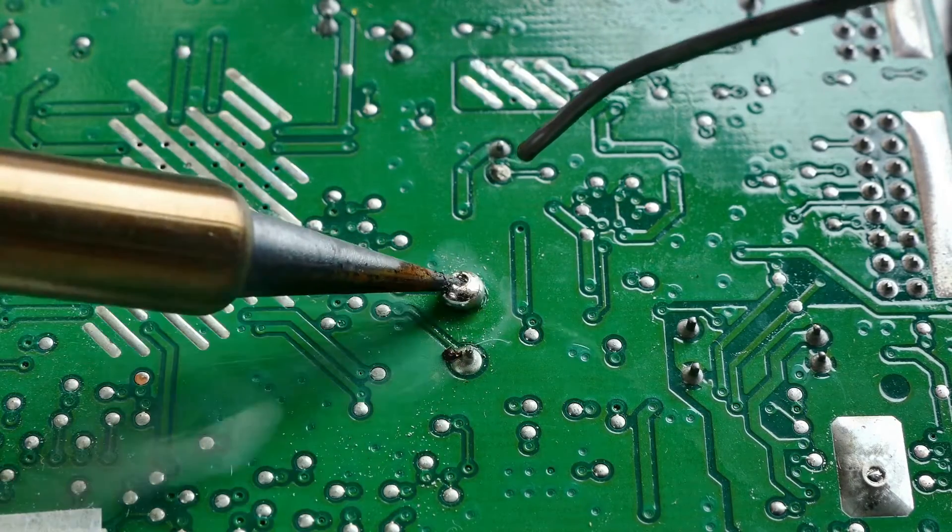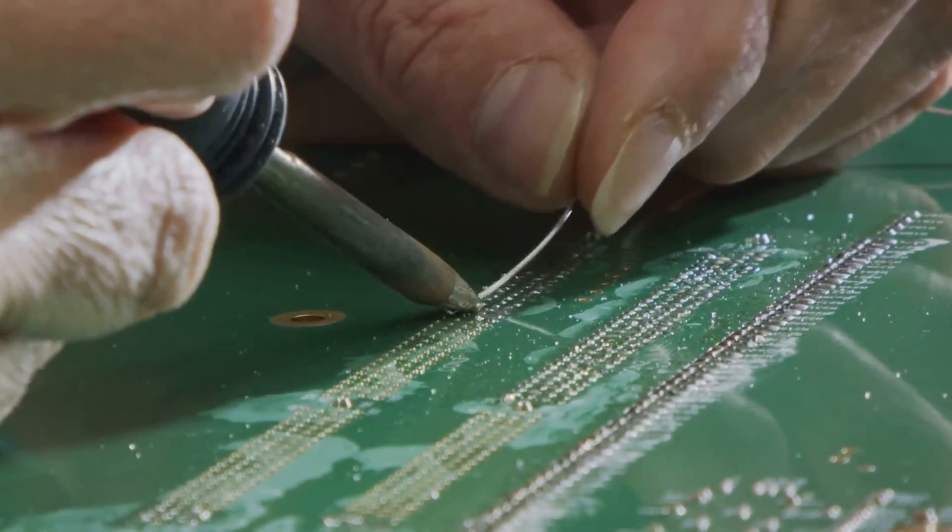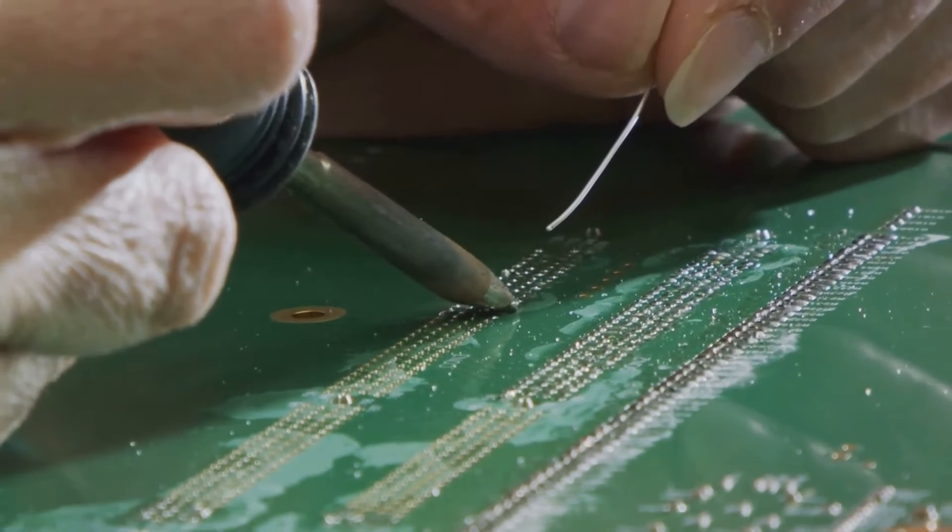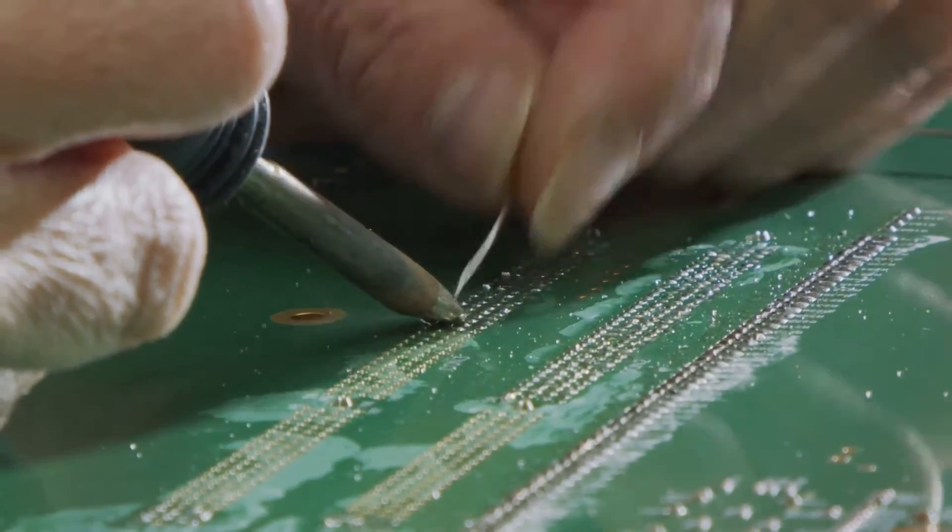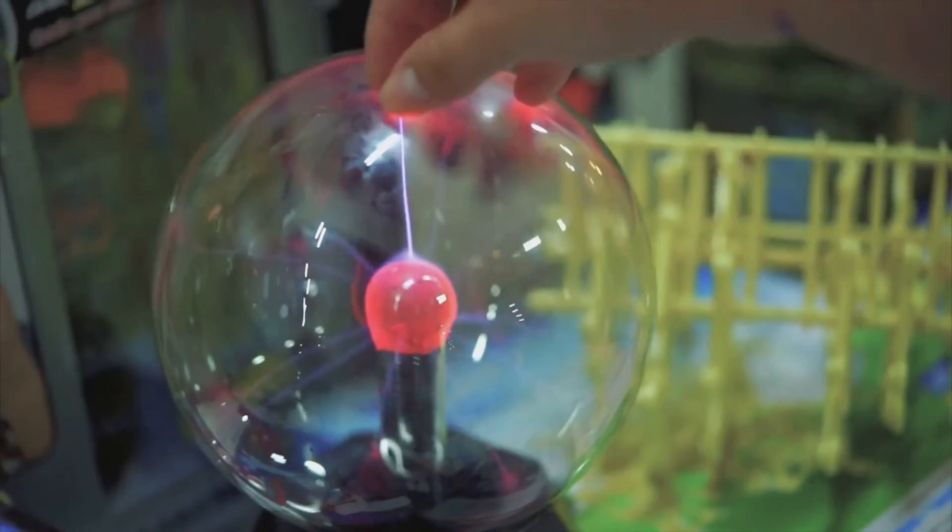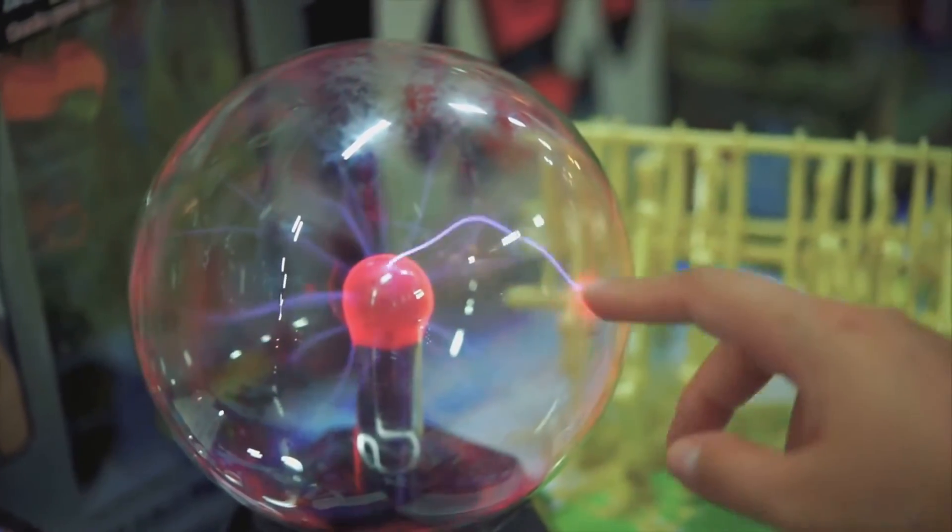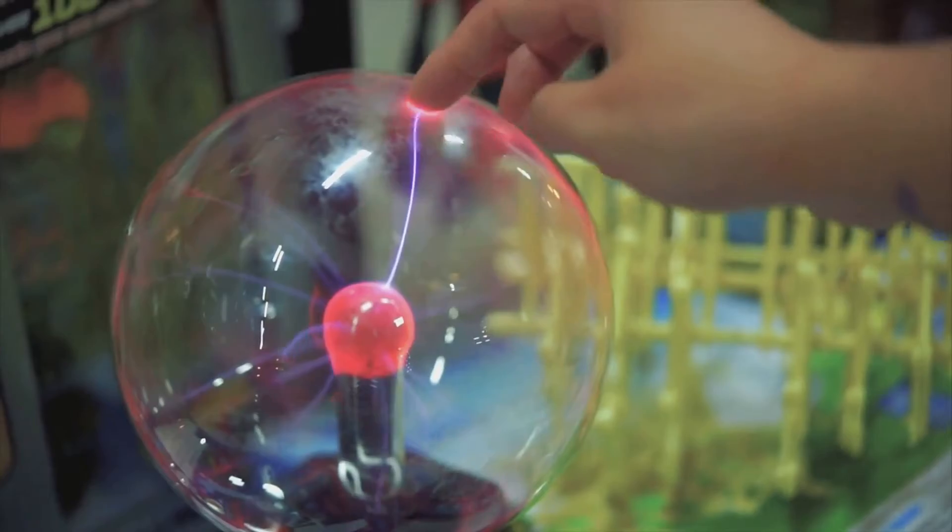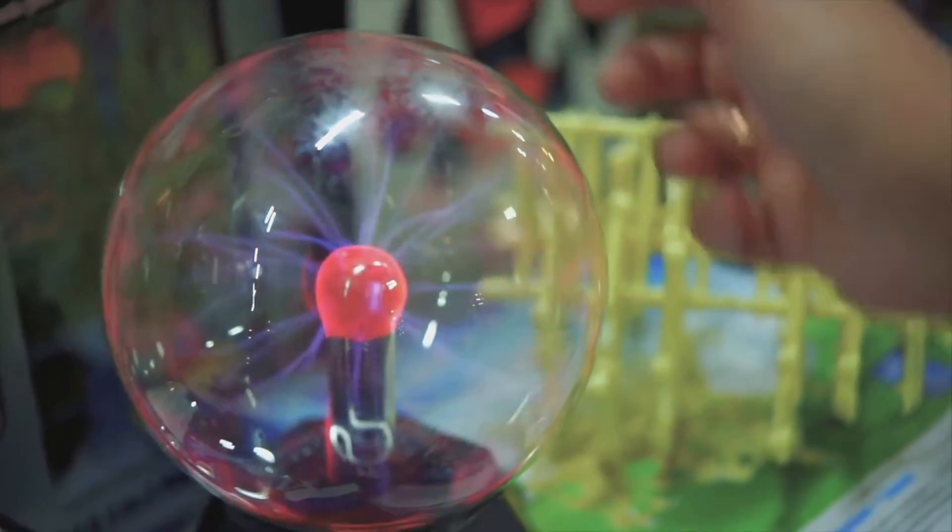These wires are fascinating components of the electronic world, and their working principle is even more intriguing. Hall sensor wires are essentially made to detect magnetic fields, converting these fields into electrical signals. This happens due to a phenomenon known as the Hall effect, where a voltage difference is created across an electrical conductor, transverse to an electric current in the conductor, and a magnetic field perpendicular to the current.